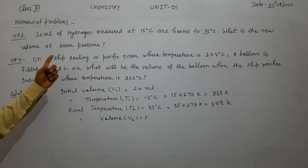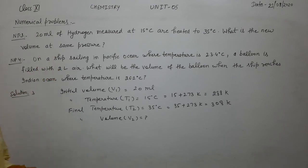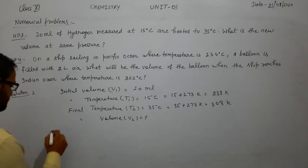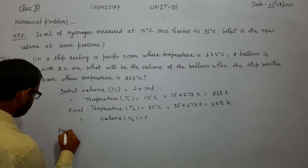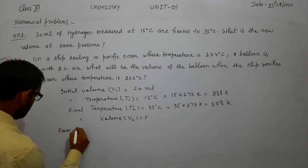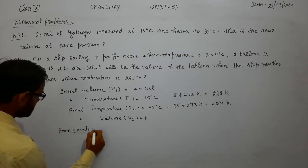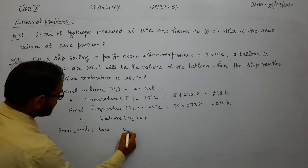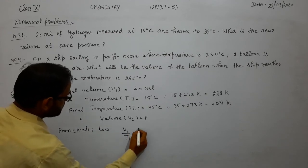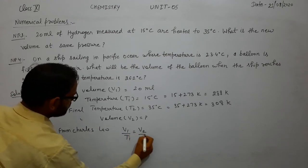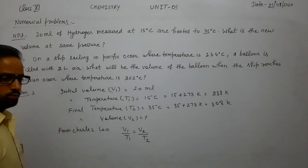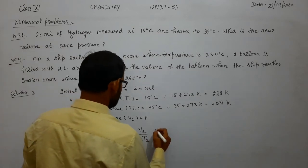Since pressure remains constant, we apply Charles's law. From Charles's law, V1 by T1 is equal to V2 by T2. Substituting the values: V1 is 20 ml divided by T1 which is 288 Kelvin, equal to V2 divided by T2 which is 308 Kelvin.